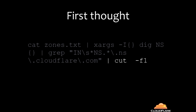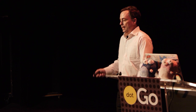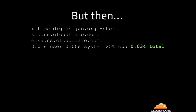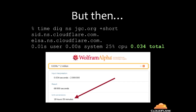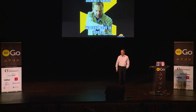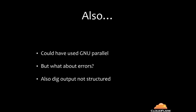I thought I'd pipe it into xargs, use dig, grep out the nameserver lines, use cut to get the zone, sort it, then unique it. Easy, no code needed. But then I asked: how long do these things take? I looked up my own zone — it took 34 milliseconds. 34ms times 2 million is about 18 hours. Damn, we don't have 18 hours.